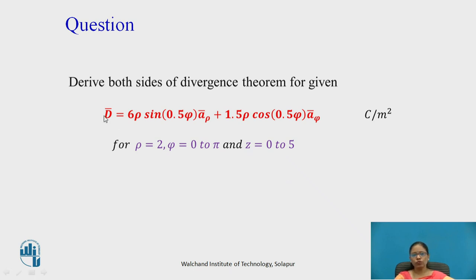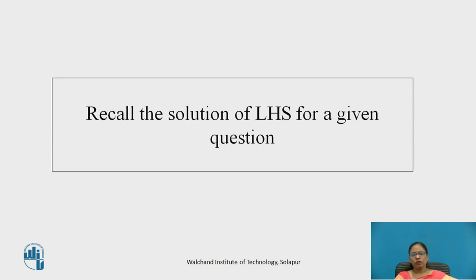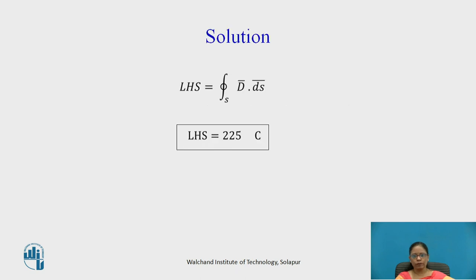I have taken a case where I want to derive both sides of the divergence theorem for a given D-bar in cylindrical coordinate system, with the given ranges, and verify the divergence theorem. We have already done the LHS part in divergence theorem part 1. When we solved it, the LHS — the closed integral of D-bar dot dS-bar — gave us 225 coulombs. I am showing this because when we solve the RHS part, we should be able to verify it with the LHS.